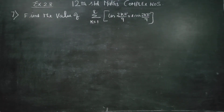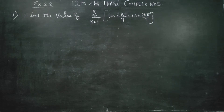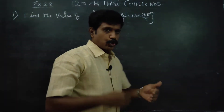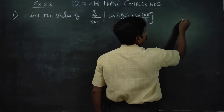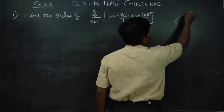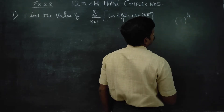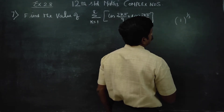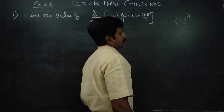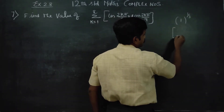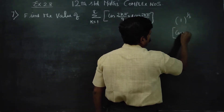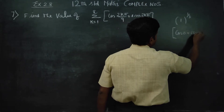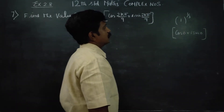Dear 12th standard students, in exercise number 2.8, sum number 7, find the value. Just a revision of cube root of unity — what is cube root of unity? One to the power one-third is called cube root of unity. One can be written in polar form as cos 0 plus i sine 0, which is the ready-made polar form of 1.